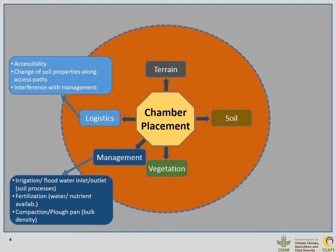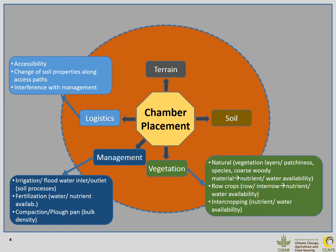Management is very much about irrigation, fertilization, and compaction. We should be sure that our chambers represent the major management activities we want to monitor and capture their effects on greenhouse gas fluxes. Vegetation considerations include ensuring homogeneous conditions—for example, in a crop field, we should not only measure in crop interspaces but also between rows, and we should include the crop within the chamber.